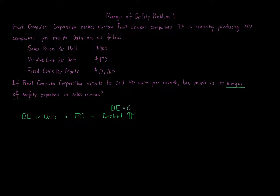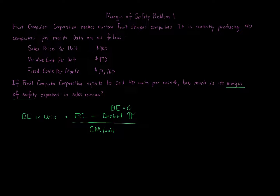Break-even desired profit is always zero, but remembering the formula this way means you can also use it for targeted profit questions — just plug in the desired profit instead of zero. The denominator is always the contribution margin per unit. So step one in a margin of safety question: calculate the break-even in units.